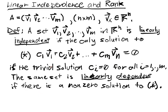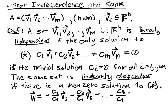If C1 is non-zero, then we can subtract this from this side and then divide both sides by negative C1, and we'll get V1 equals minus C2 over C1 times V2 minus C3 over C1 times V3, minus Cm over C1 times Vm. So that means that V1 can be expressed as a linear combination, a linear combination of the other Vs.